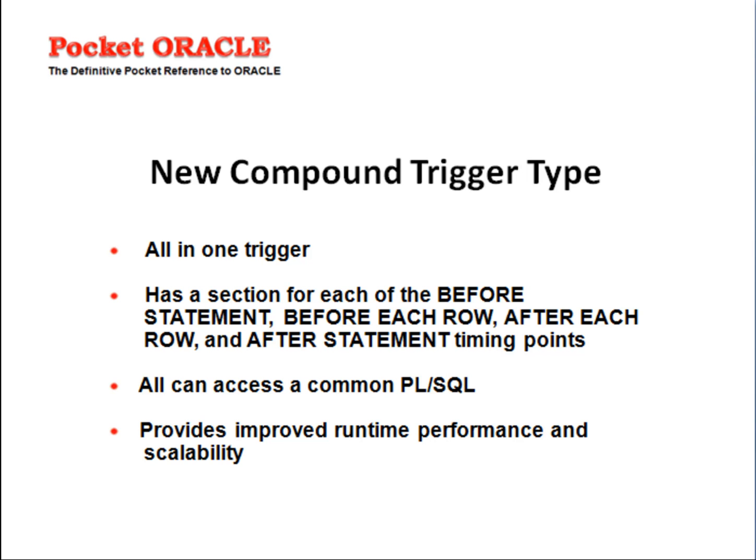There are also enhancements to triggers. Oracle has introduced a new compound trigger type — an all-in-one trigger. You can have all possible triggering events in a single trigger: BEFORE STATEMENT, BEFORE EACH ROW, AFTER EACH ROW, AFTER STATEMENT — everything in one trigger, executing one after the other. Earlier we couldn't control the order of execution of triggers, but now we can specify that this trigger follows another. This provides improved runtime performance and scalability.